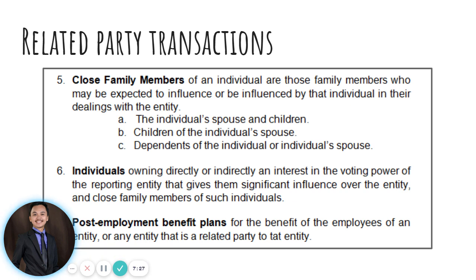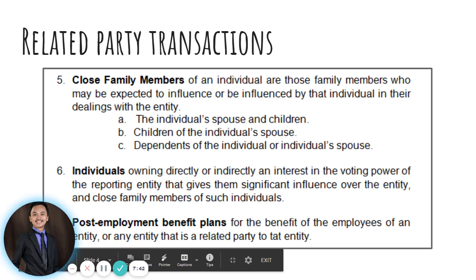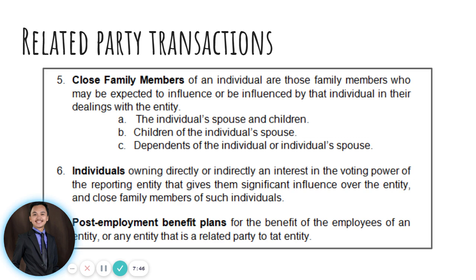Close family members of an individual are those family members who may be expected to influence or be influenced by the individual in their dealings with that particular entity. All close family members of key management personnel are also considered related parties. Examples of close family members include the individual's spouse and children, children of the individual's spouse, and dependents of the individual or individual's spouse. Individuals owning directly or indirectly an interest in the voting power of the reporting entity that gives them significant influence, and their close family members, are also included.